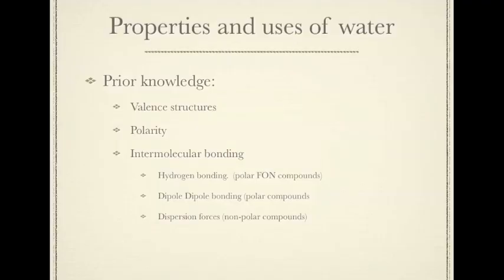A few prior knowledges that you should know — things that I'll be referring to that have been taught in Unit 1. First of all, you need to understand about valence structures for covalent compounds, so how to draw valence structures would be a nice prior knowledge to have. You also need to understand about polarity — how you can tell if something is polar or non-polar — and have an understanding about the three different types of intermolecular bonds that can occur.